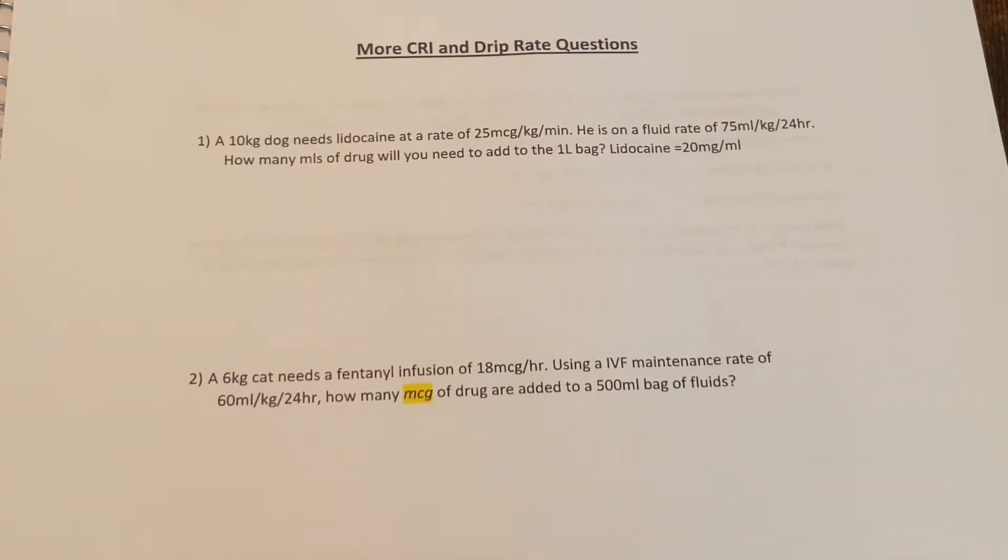So I've made up some CRI and drip rate questions which are available on Moodle on the forum part of the announcements. So if you download them and print them off and go along with me, it'd probably make it a little easier. For these questions and for real life, I feel like using critical thinking and logic is a little easier and makes more sense rather than using dimensional analysis.